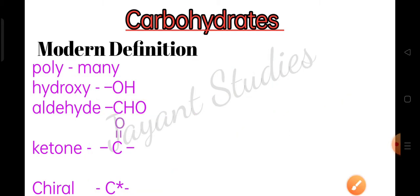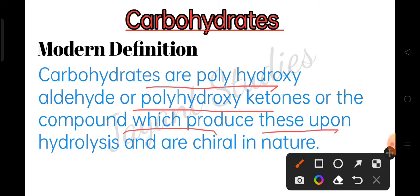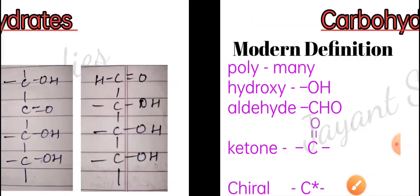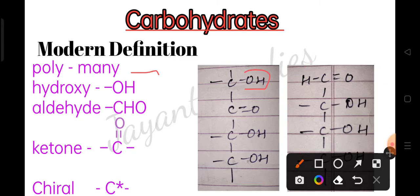So that was our definition: carbohydrates are polyhydroxy aldehydes or polyhydroxy ketones, or compounds which produce these upon hydrolysis and are chiral in nature. Poly means many — here you can see many OH groups, like three OH groups in the structure.